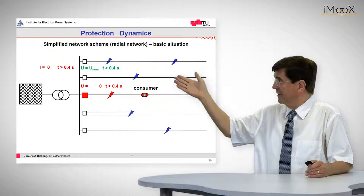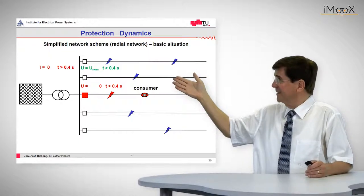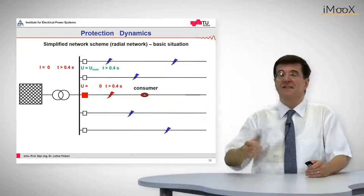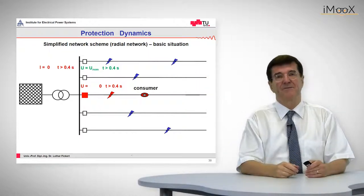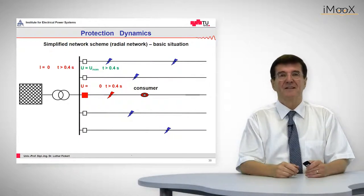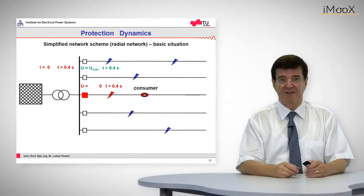Look at the picture to my right side — we see that the voltage is again in the green range. So this was the lecture about the basics of overcurrent protection. Thank you very much.